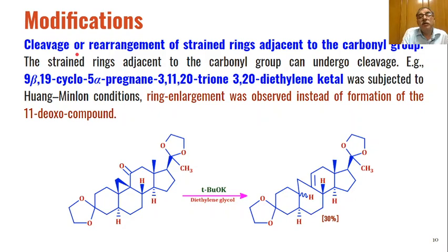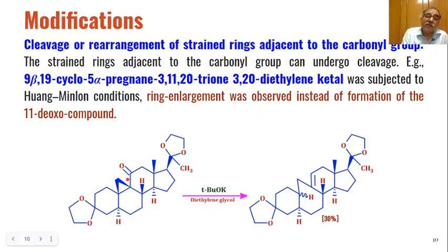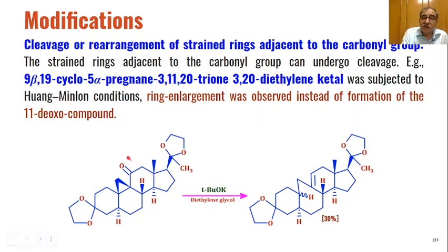Wolf-Kishner reduction can also be applied to strained rings adjacent to a carbonyl group. For example, a three-membered ring (cyclopropane) adjacent to a carbonyl, when reacted with potassium tert-butoxide in diethylene glycol, undergoes ring-opening at the strained bond. After methylene compound formation, an alkene is obtained with carbon-carbon bond breaking and ring expansion.